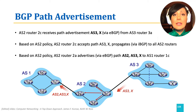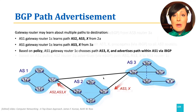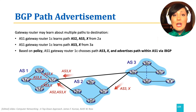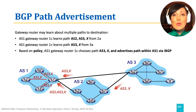At which point, the whole network has the information of who to reach X through, using the vectors that have been advertised. However, a gateway router may learn about multiple paths to a destination. For example, AS1 gateway router 1C, which had previously learned path AS2-AS3-X from 2A, based on its policy, chooses path AS3-X and advertises that path within AS1 via iBGP.